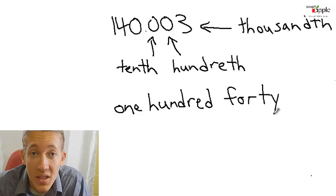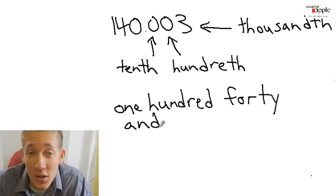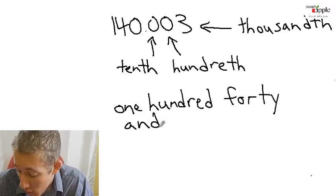Now the decimal gets changed to 'and' when you write it in word form. So it's 140 and now you can skip any number to the right of the decimal that's a zero.